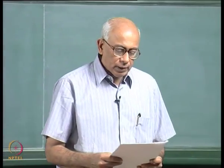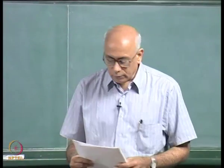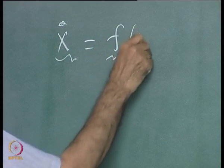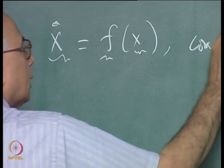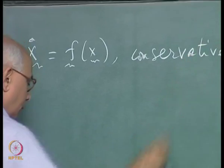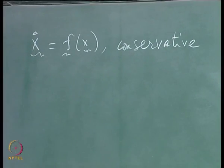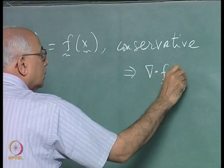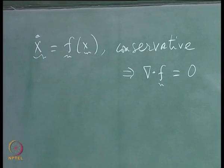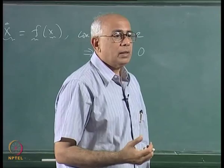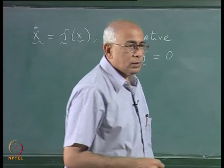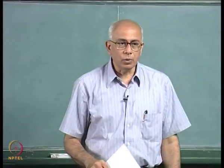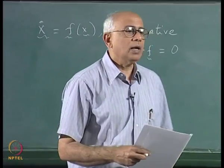The first statement: a conservative dynamical system given by an equation of motion of the form ẋ = f(x) cannot have any attractors. The answer is true, because for a conservative system this implies that ∇·f = 0, and therefore the volume element in phase space is preserved under the flow. Since the volume elements do not change, the system cannot have any attractors.